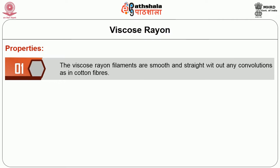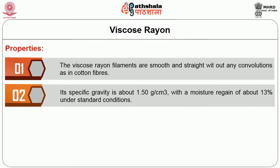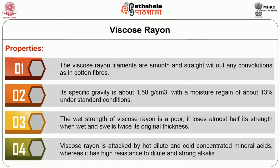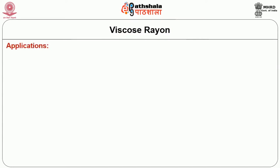A brief about the properties of Viscose Rayon. The Viscose Rayon filaments are smooth and straight, without any convolutions as in cotton fibers. Its specific gravity is about 1.50 grams per cubic centimeter, with a moisture regain above 13 percent under standard conditions. The wet strength of Viscose Rayon is poor. It loses almost half its strength when wet and swells twice its original thickness. Viscose Rayon is attacked by hot dilute and cold concentrated mineral acids, whereas it has high resistance to dilute and strong alkalies. It is not affected by most organic solvents used in dry-cleaning processes.